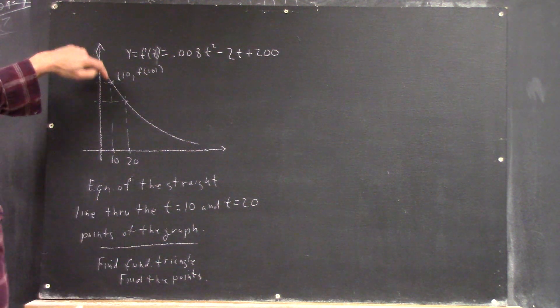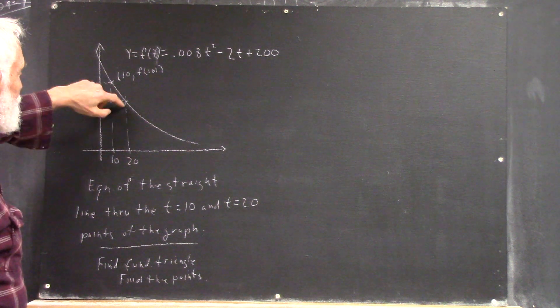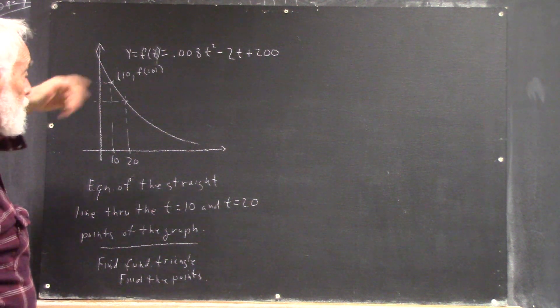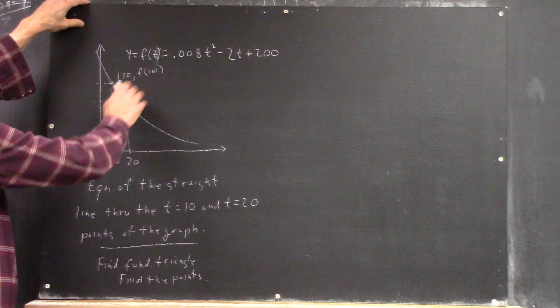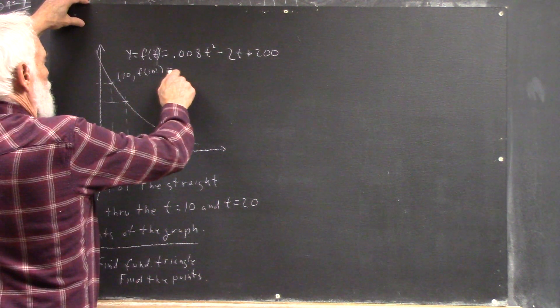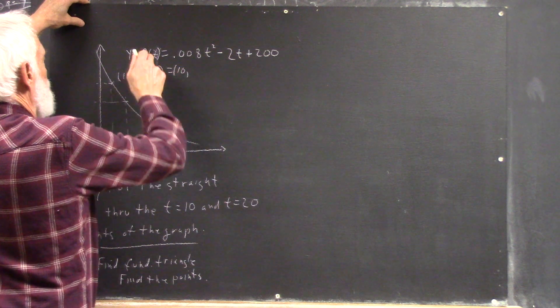Well, we mark a couple of points to represent these points. And we've got (10, f(10)). What do we mean by that? That means 10 and plug in 10 for t.